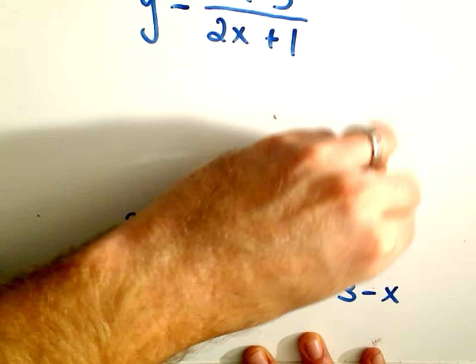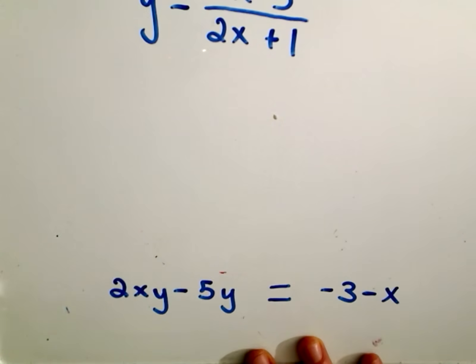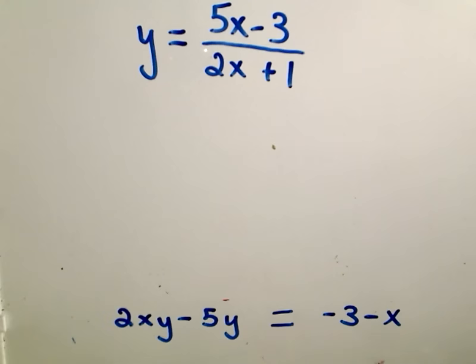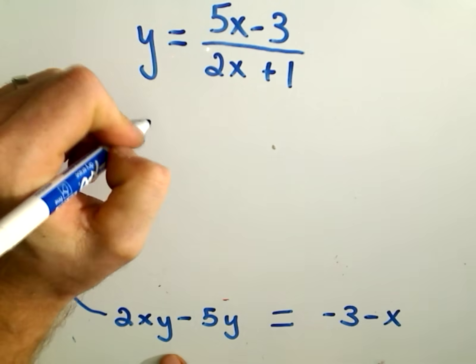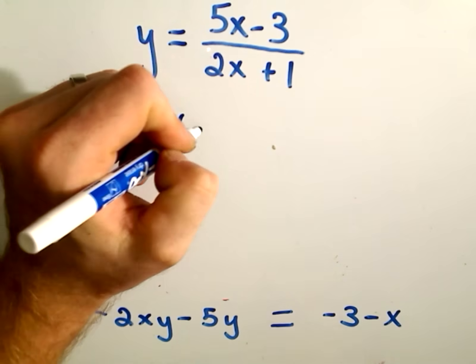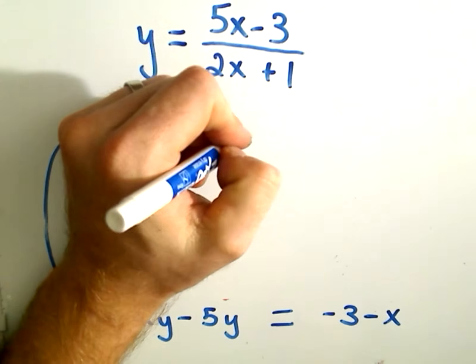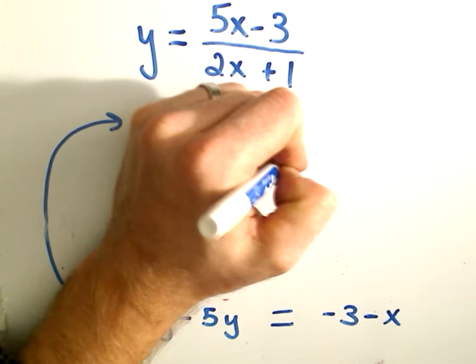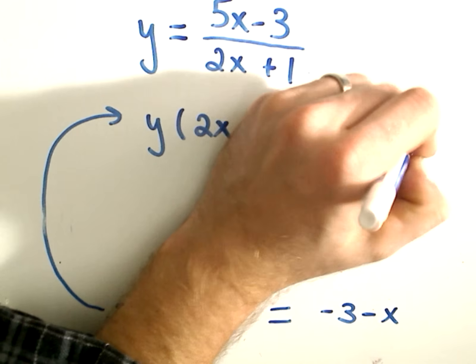And at this point, the reason for putting the y's all on the same side is that I can factor a y out now. So I can factor out a y, and in parentheses, I would be left with, I would need a 2x, and then I would need a negative 5. On the right side, I have negative 3 minus x.